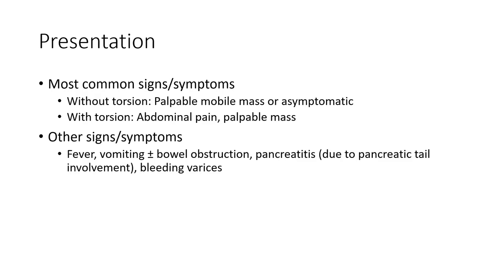The most common presentation without torsion is asymptomatic or minimally symptomatic. With torsion, the patient will present with acute abdominal pain and other symptoms including fever, vomiting, bowel obstruction, pancreatitis due to pancreatic tail involvement, and bleeding.